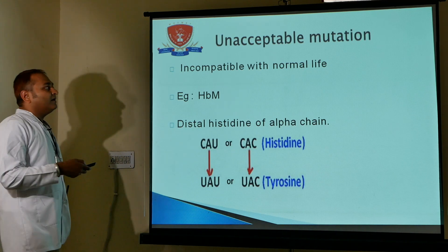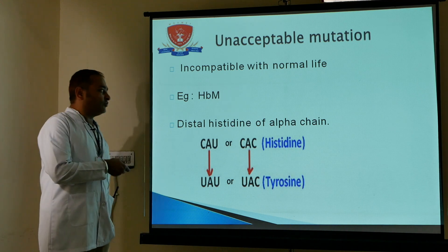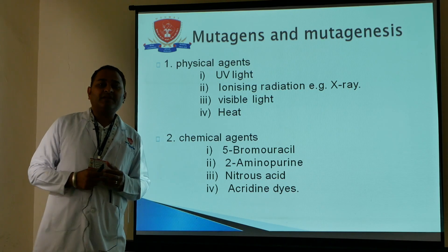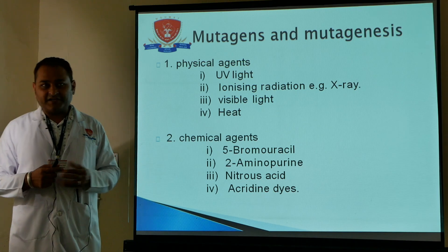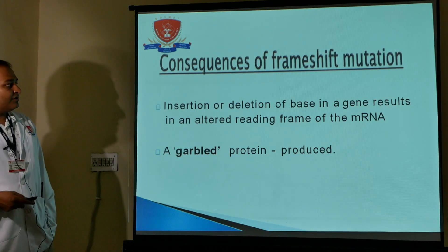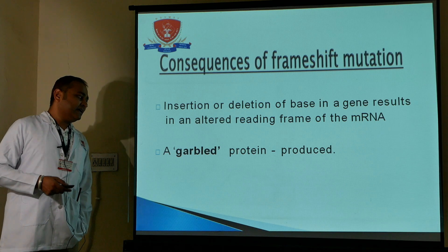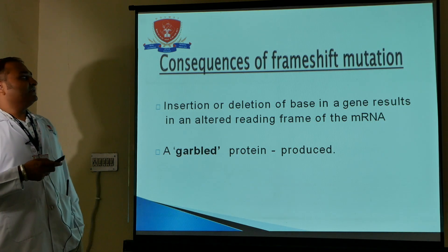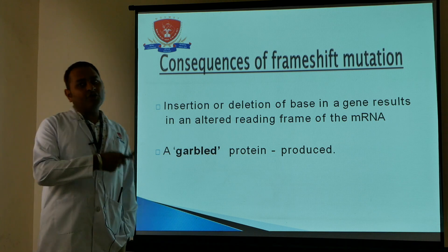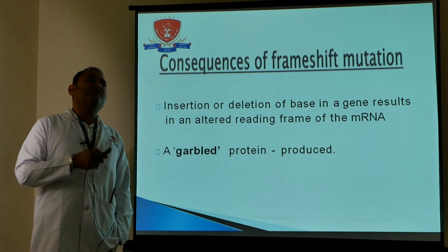Unacceptable mutations produce a protein that differs significantly from the normal — for example, Hemoglobin M. This is not a normal mutation outcome. Frameshift mutations from insertion or deletion of bases in a gene result in an altered reading frame of the messenger RNA, producing a garbled protein that is not fully functional.